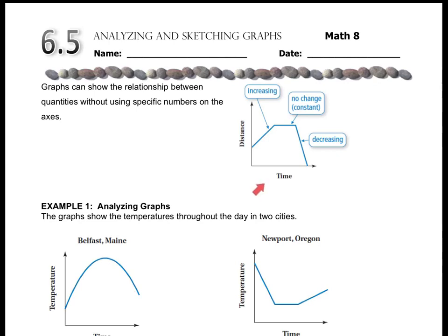For example, here we have distance and time, and we've got an increasing slope. But what does increasing mean? As time passes, the distance is increasing.